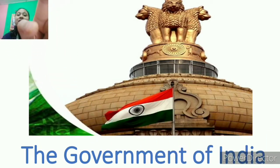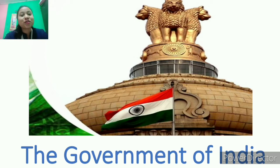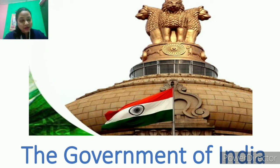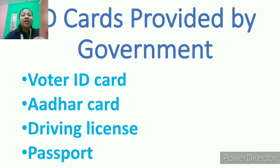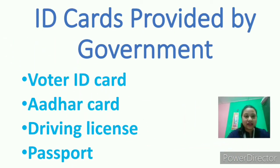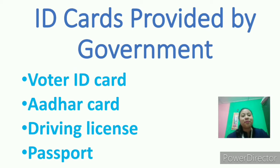Identity cards are proofs provided by authorities. Our school provides us with identity cards, and similarly the Government of India provides various identity cards through government bodies. These identity cards act as our identity proofs. The various ID cards provided by the government are voter ID card, Aadhar card, driving license, passport, ration card, etc. Today we are going to learn more about the voter ID card, the Aadhar card, the driving license, and the passport.